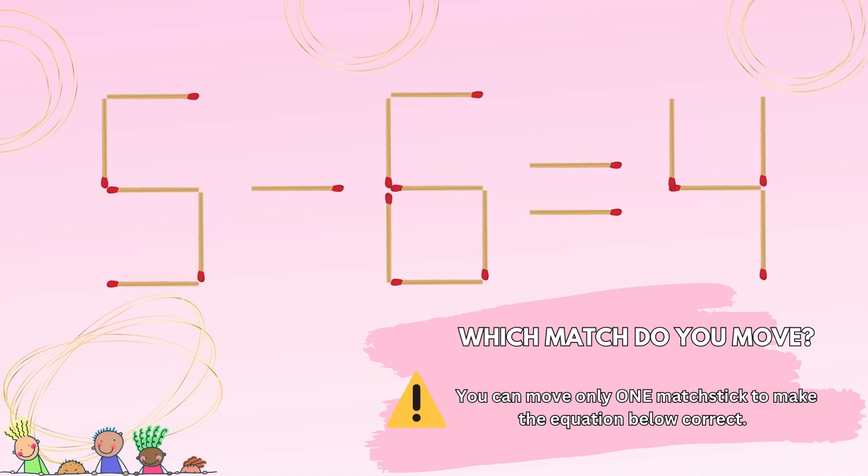All you need to do is take the bottom left matchstick from the six and move it up to the five to make it a nine. Now you've got a brand new equation that reads 9 - 5 = 4, which any first grader would agree is correct.